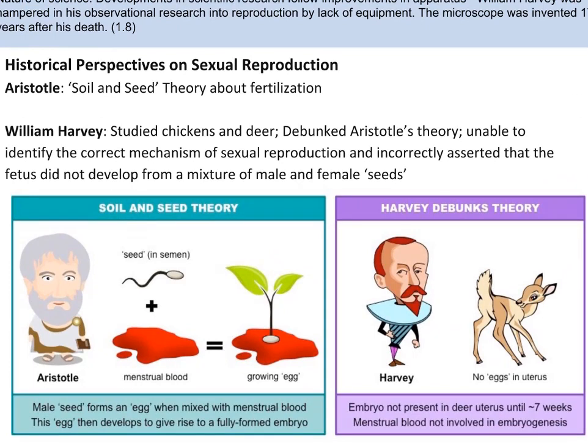Harvey studied animal reproduction in chickens and deer, and he dissected the sexual organs of female deer after they mated in an effort to identify the developing embryo. However, he was unable to detect a growing embryo until approximately six to seven weeks after mating had occurred. So he concluded that Aristotle's theory was incorrect and that menstrual blood did not contribute to the development of a fetus. However, Harvey was unable to identify the correct mechanism of sexual reproduction and incorrectly asserted that the fetus did not develop from a mixture of male and female seed.